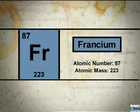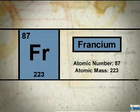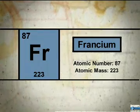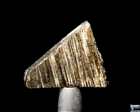Element number 87 on the periodic table is francium. The atomic symbol for francium is FR. This sample of uranium contains a very small quantity of the element francium.